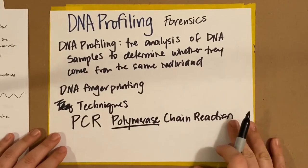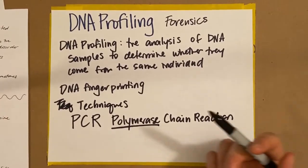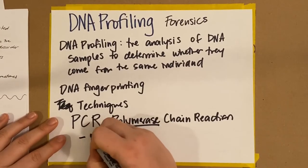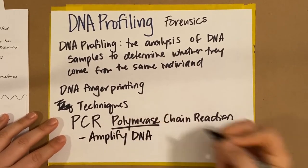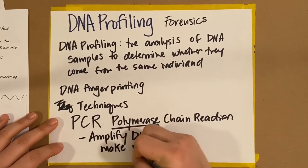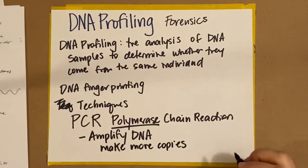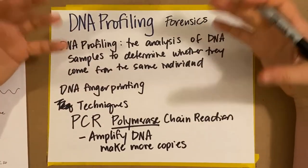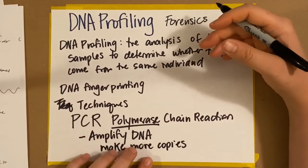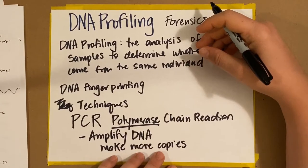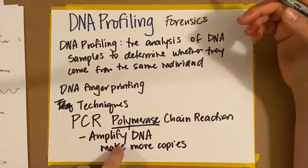The word polymerase should sound familiar because we've talked about DNA polymerase and RNA polymerase. In our case, PCR is going to make more DNA. The job of PCR is amplifying DNA — amplify means to make more copies. For example, if you have a very small DNA sample from a crime scene, like a hair, you can extract the DNA and then make many copies so you can test it. You would not want to use the original sample alone because once you've used it, it's gone. PCR allows us to make many copies so that we can test it.